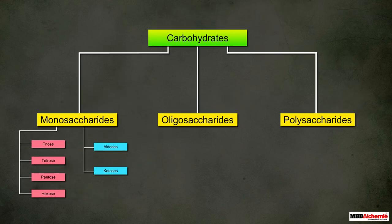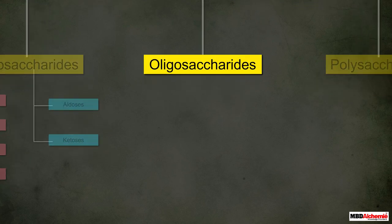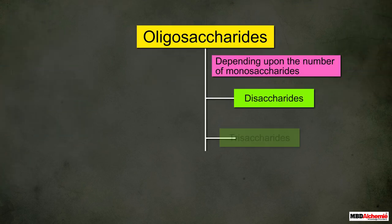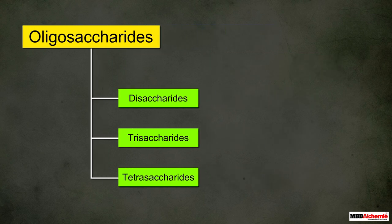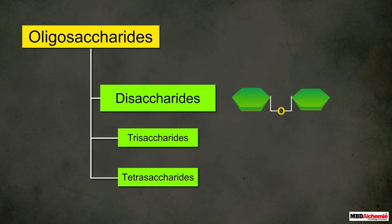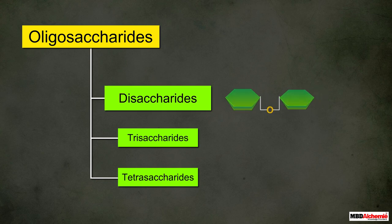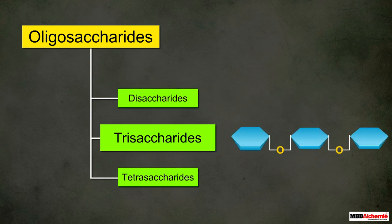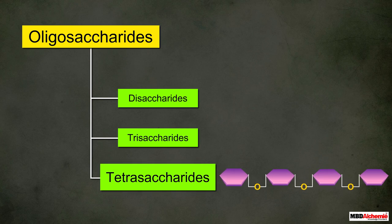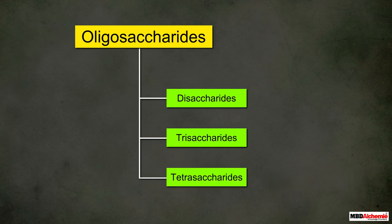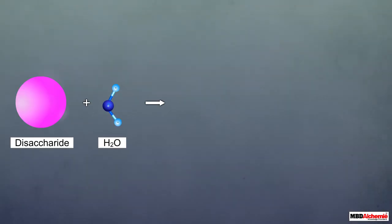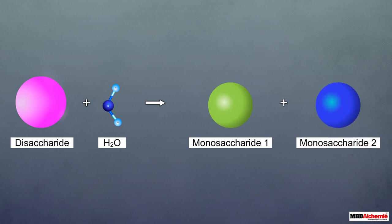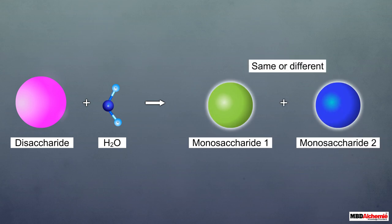Just like monosaccharides, we can also classify oligosaccharides depending upon the number of monosaccharides obtained on their hydrolysis. These include disaccharides that give two monosaccharides, trisaccharides that give three monosaccharides, tetrasaccharides that give four monosaccharides, and so on. The most common of these are the disaccharides; the two monosaccharides obtained from the hydrolysis of a disaccharide can be the same or different.